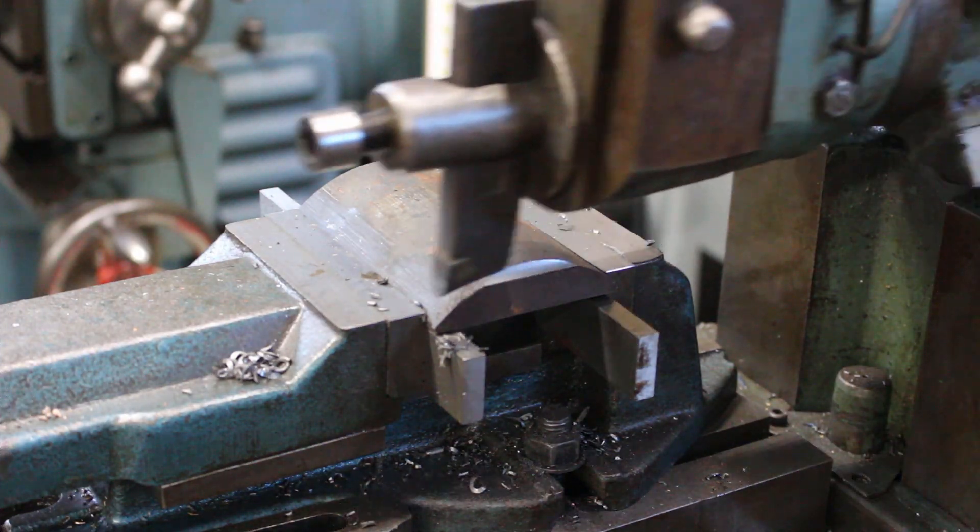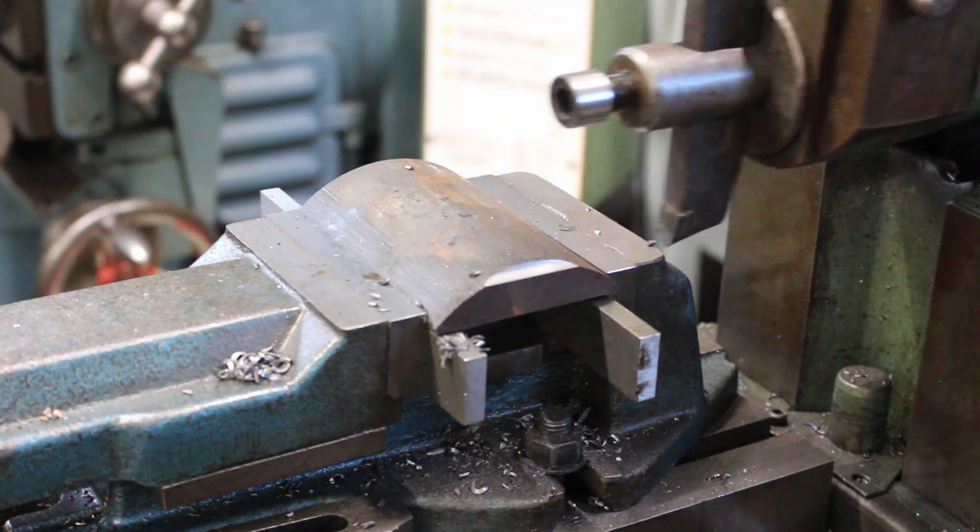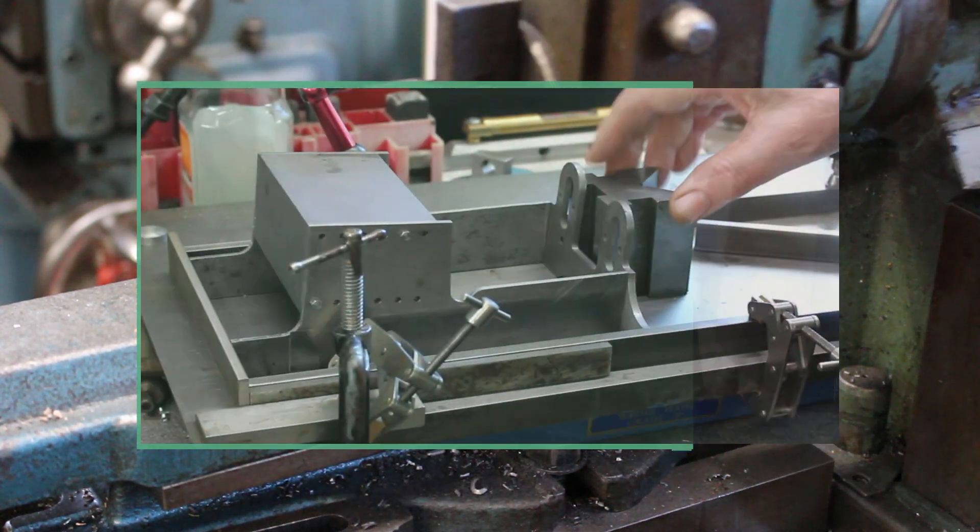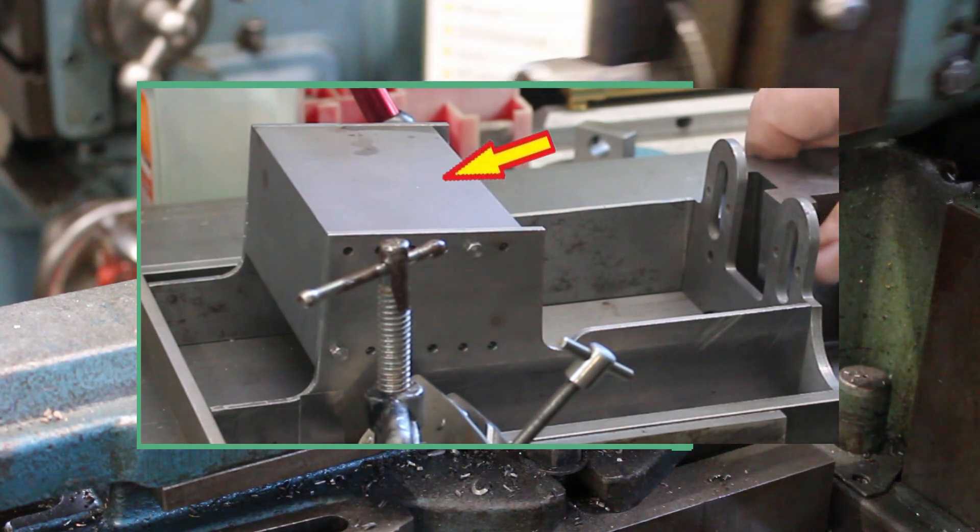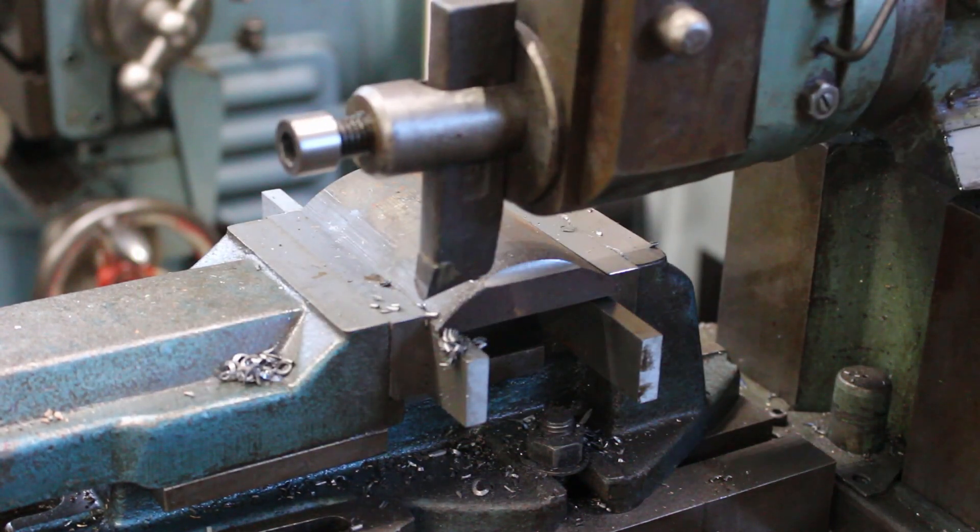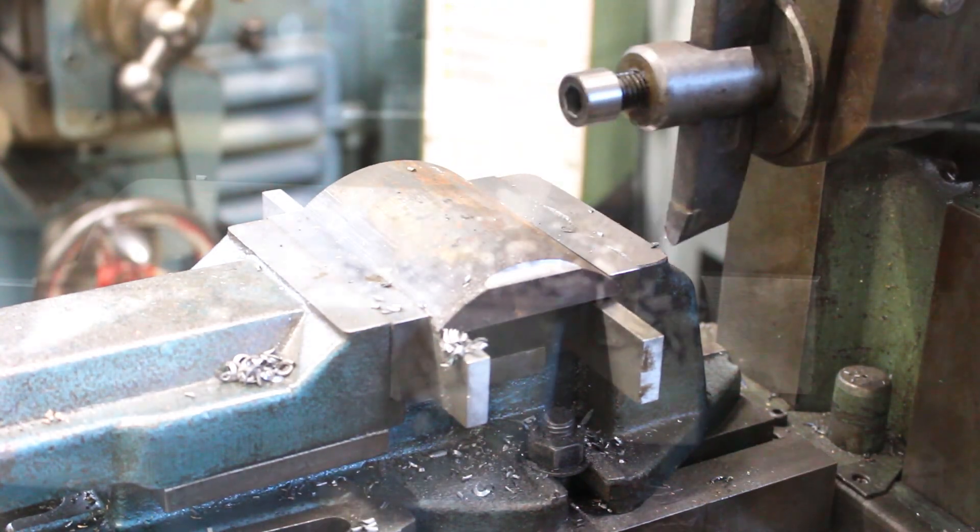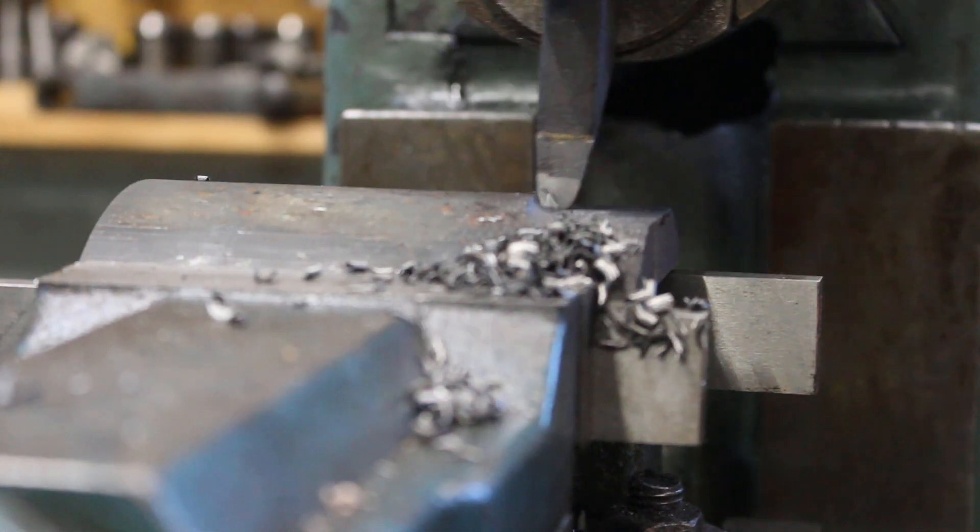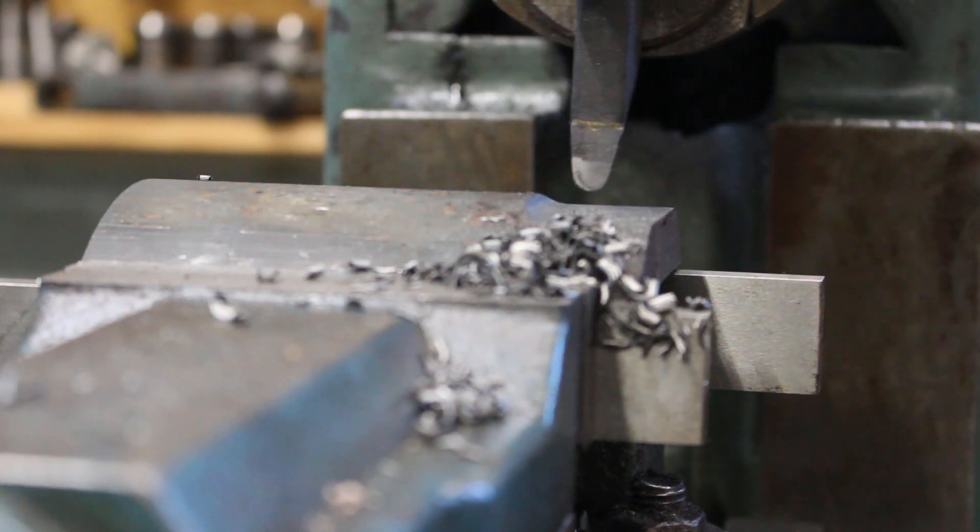I'm going to proceed first of all by making the spacers and I'm using a piece of scrap cast iron which is an off cut from when I made the cylinder block which I'll show in a future video. Here I'm using the shaping machine to machine the faces parallel to a thickness of half an inch or 12.7 millimeters.